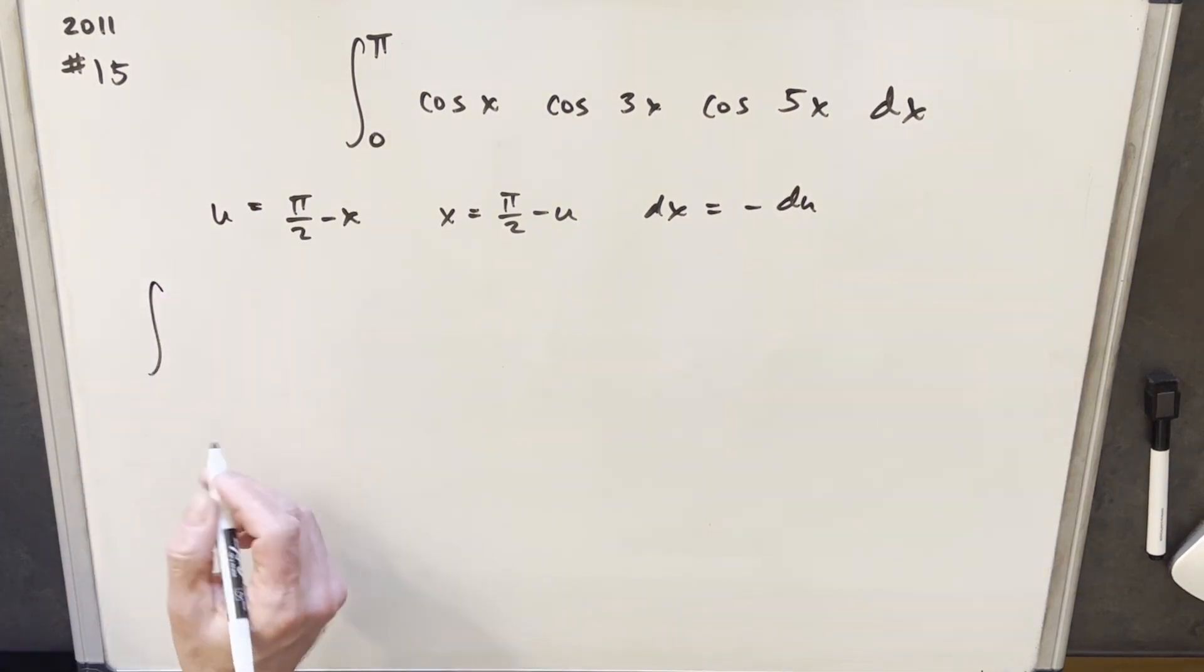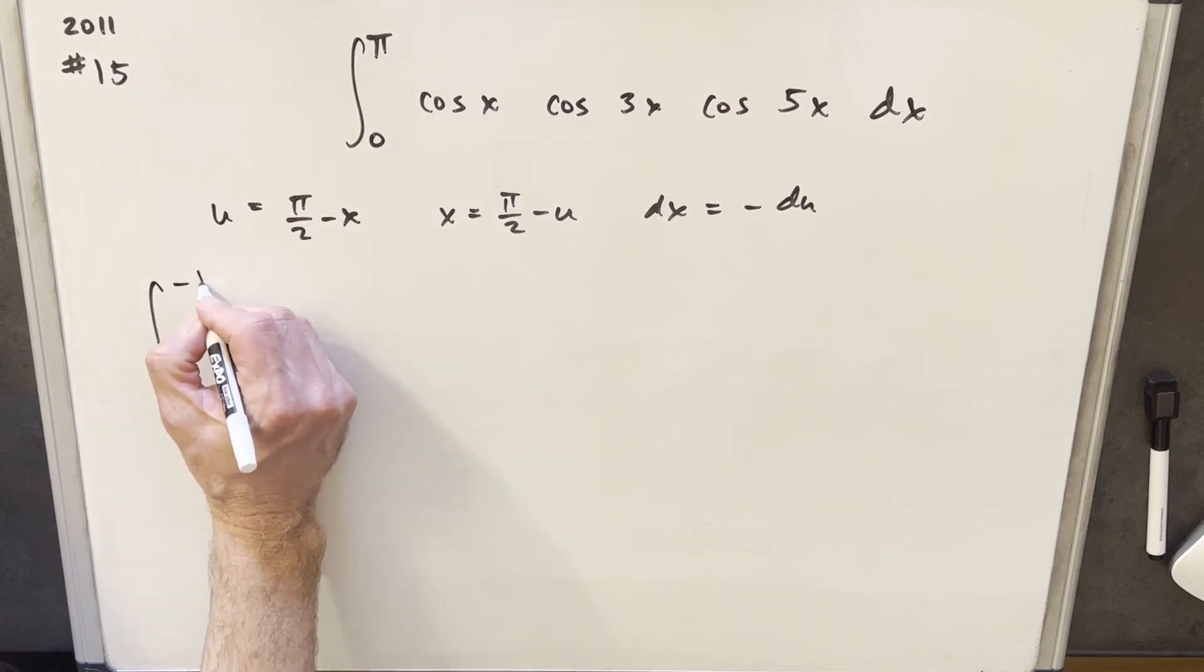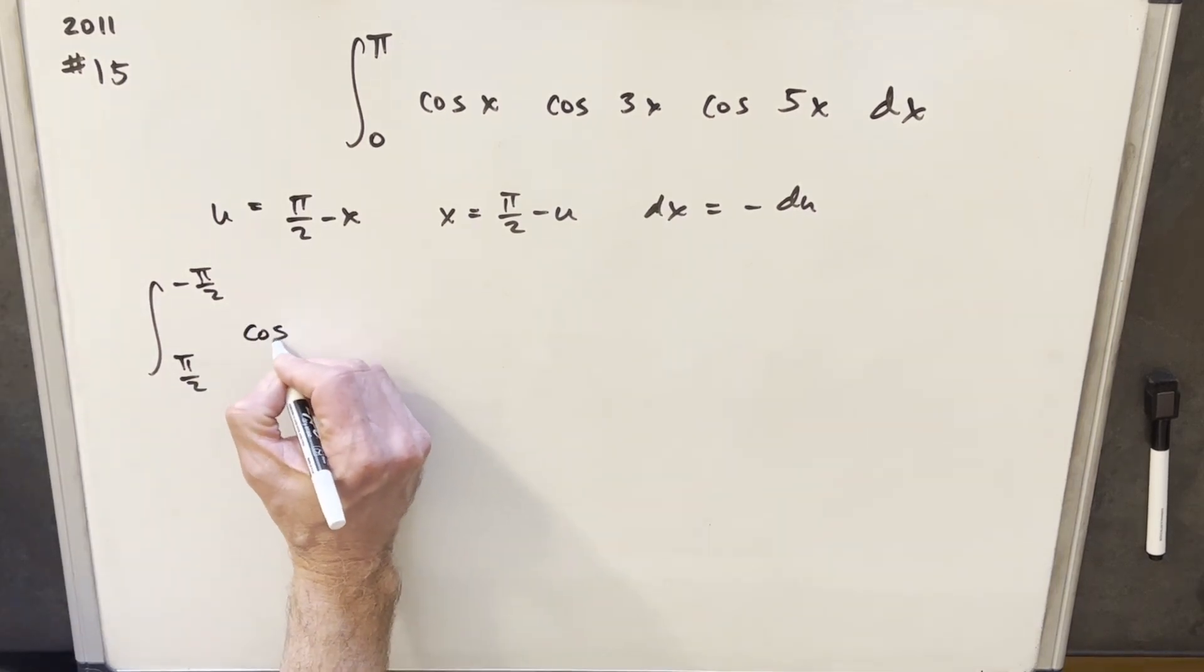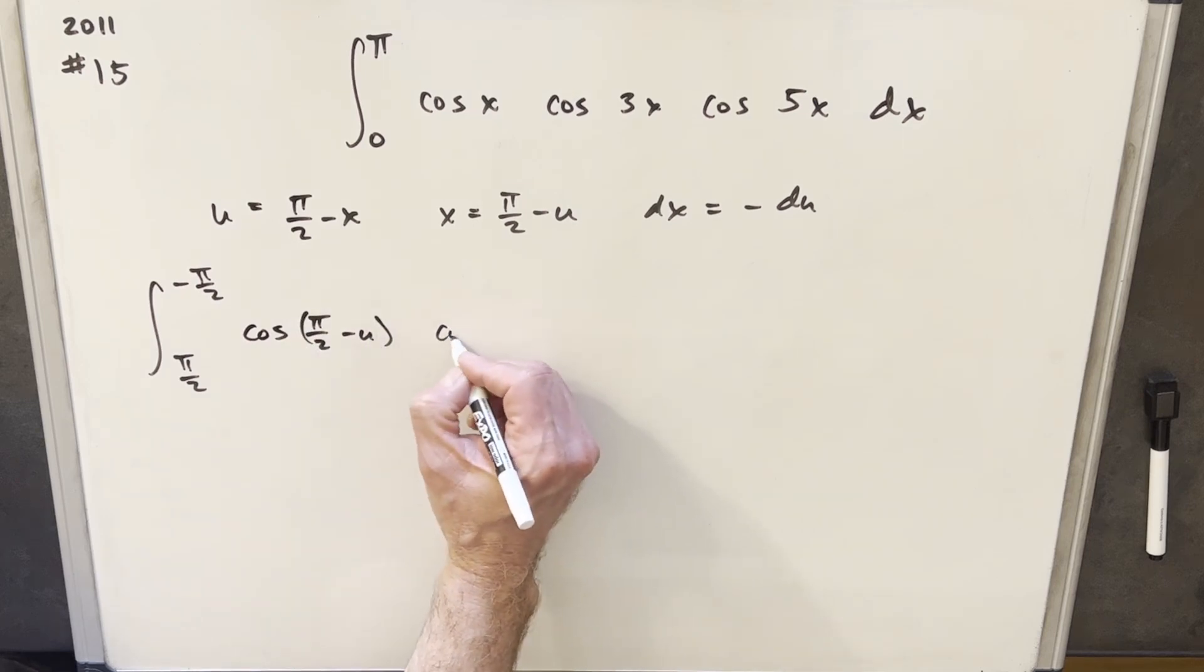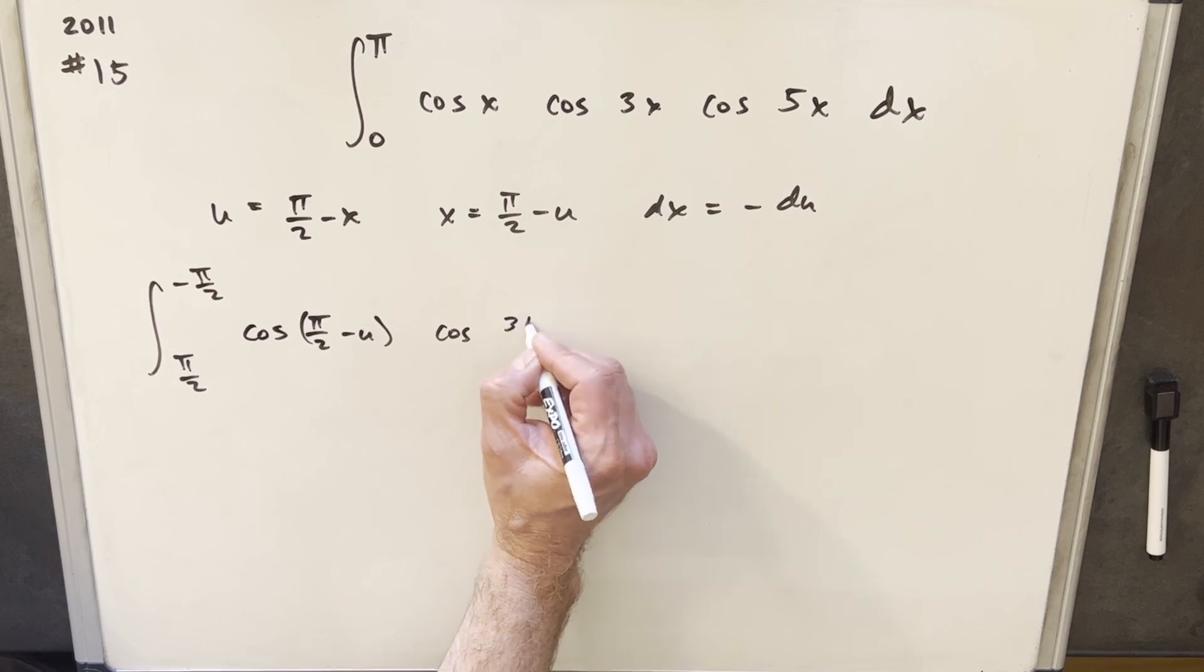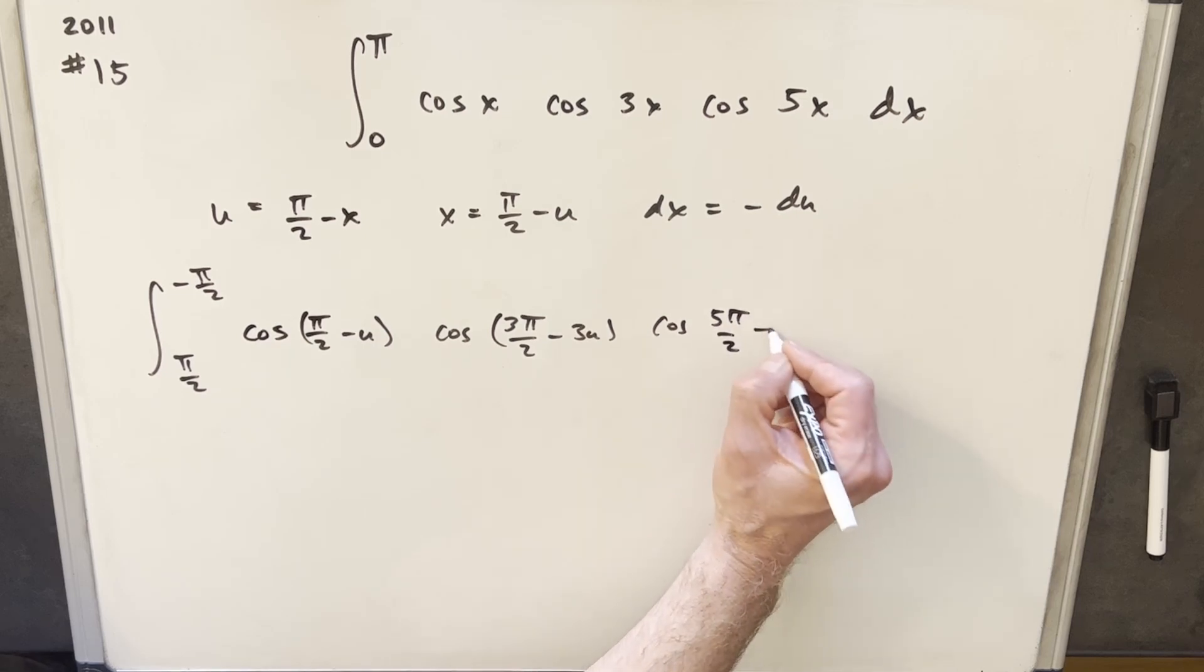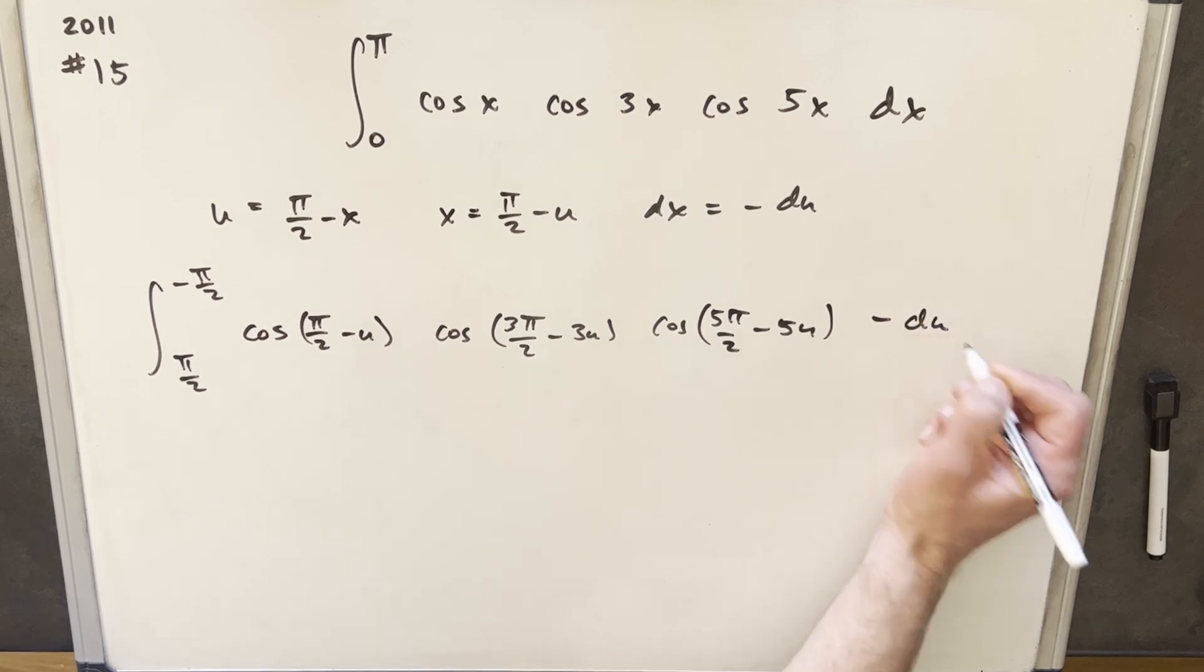And then we'll make this substitution. So first, okay, we plug pi in here. We're going to have a minus pi over 2. We plug a 0, and we're going to have pi over 2. Okay, then for our first cosine, we're going to have cosine pi over 2 minus u. Then it's just going to be very similar, but we're going to be multiplying by 3 and 5. So we're going to have 3 pi over 2 minus 3u, cosine 5 pi over 2 minus 5u, and then we're going to have a minus du here.